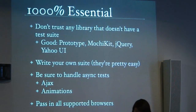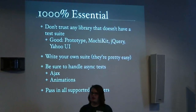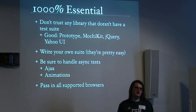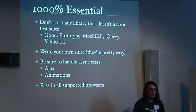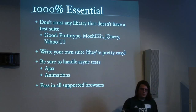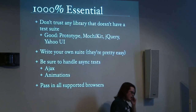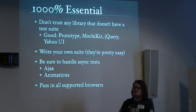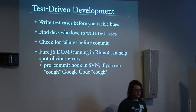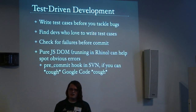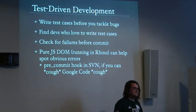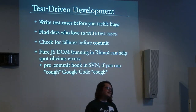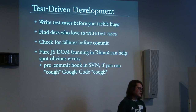Testing is absolutely essential. Don't trust any JavaScript library that doesn't have a test suite — because of all the fantastically weird browser bugs that exist, knowing how many bugs I've caught with the jQuery test suite puts fear into my heart when I see ones that don't have it. Currently Prototype and jQuery have test suites, and Yahoo just got one. Write your own suite — they're pretty easy. Make sure it passes on all browsers and handles asynchronous tests. Test-driven development is incredibly important; we use it in jQuery all the time. We write our tests first so they start failing, then it encourages us to write the implementation to make them pass. It would be great if there was a way to have a pre-commit hook in Google Code.